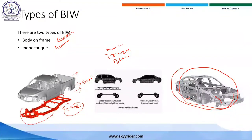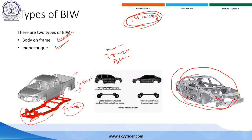In body on frame, the maximum impact load is taken by the chassis itself. But in monocoque body, the total 14,000 kg load is distributed throughout the body — where the impact is, it gets reduced. Sedans and hatchbacks use monocoque body, while heavier or bigger vehicles use body on frame.